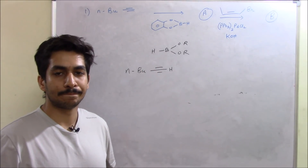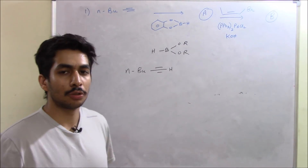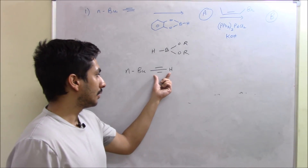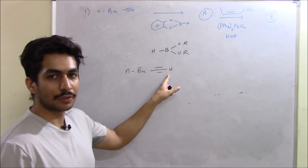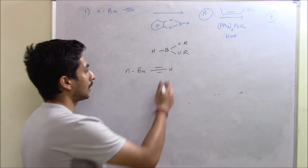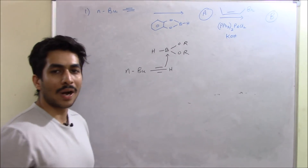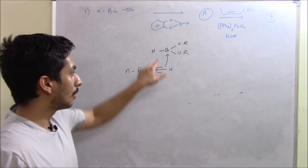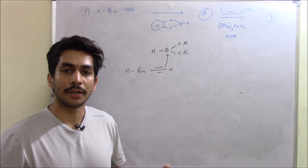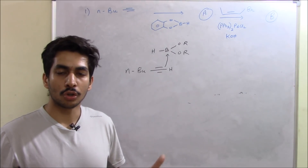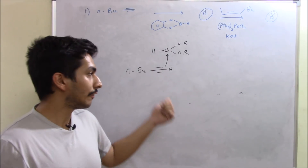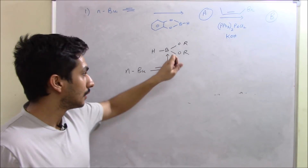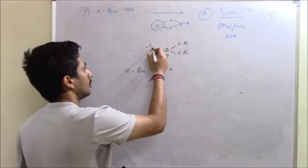For those of you who have studied hydroboration oxidation reactions, you might know that the reaction is a concerted reaction — concerted means it happens in one single step. So your terminal alkyne: from the terminal side of the carbon, that carbon is going to attack the boron. You will ask why does it want to attack the boron? It's because boron is electrophilic in nature. When you compare the electronegativities of hydrogen and boron, you will find that boron is more electropositive and hydrogen is more electronegative.